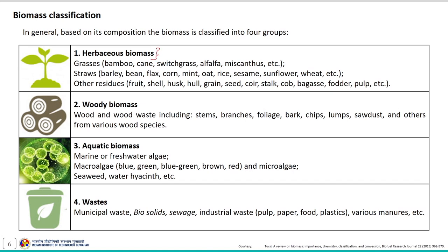Herbaceous biomass includes grasses, straws and other residues. Straw originates from agricultural residues and grasses mainly include bamboo, cane, switchgrass, and miscanthus. Straws like wheat straw and rice straw are agricultural residues. Other residues in the form of fruit, shale, husk, hull, grains, and seed are generally waste generated during processing of agricultural produce.